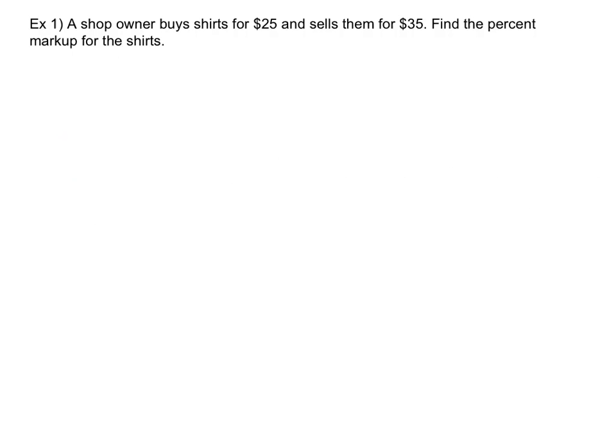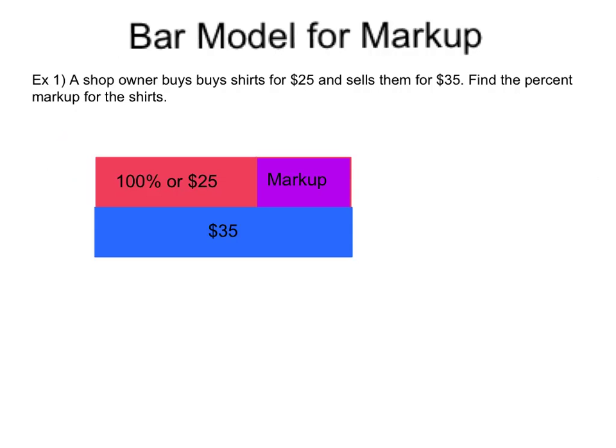Here's the first problem. A shop owner buys shirts for $25 and sells them for $35. Find the percent markup for the shirts. Here's a bar model to represent this problem. We know that 100% of the cost of the shirt is $25. Then the shop owner marks up to cover overhead costs and profit, and resells the shirts for $35.